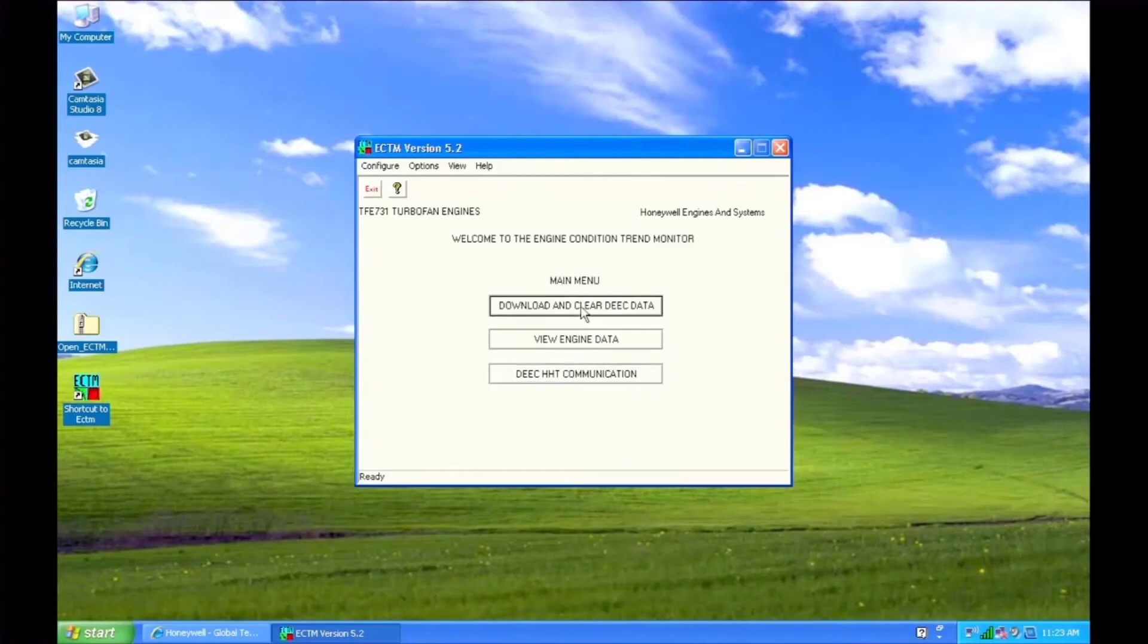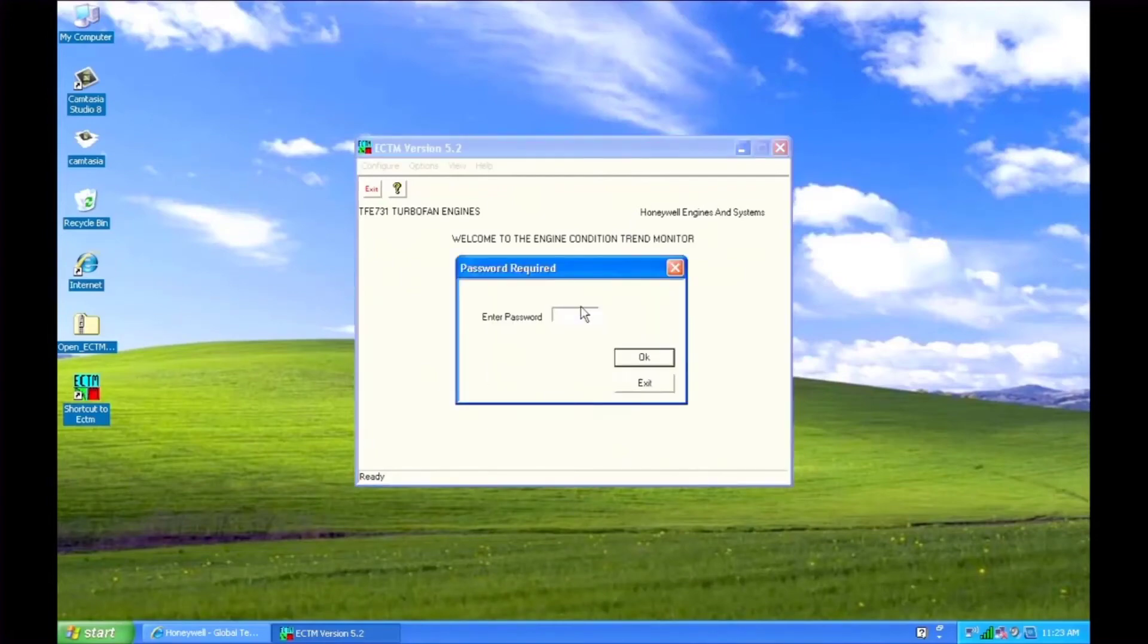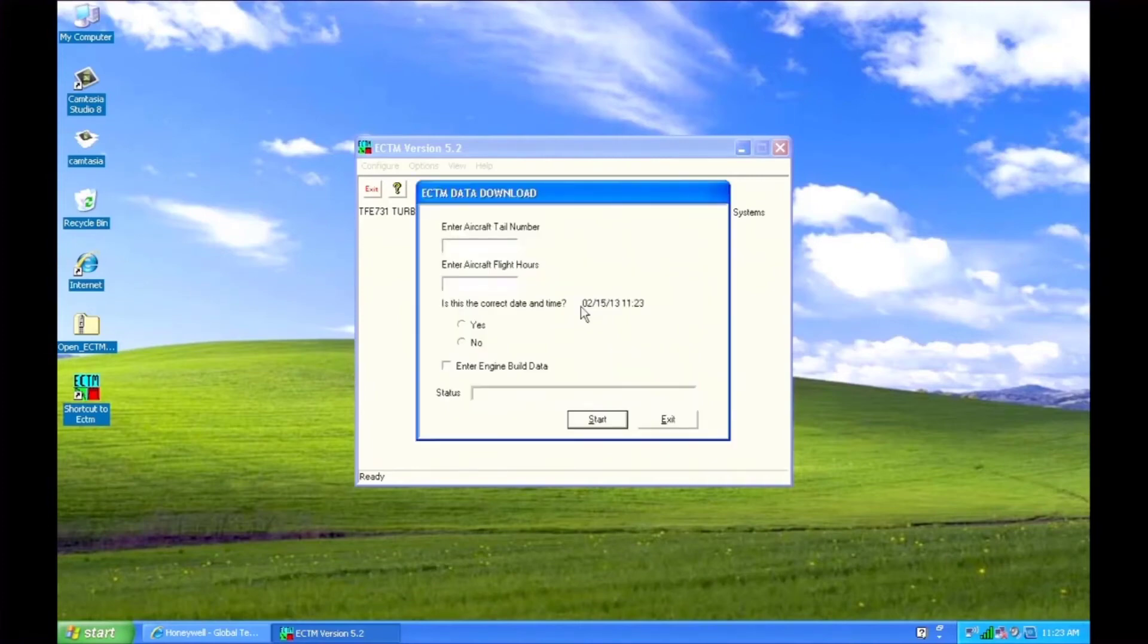Now we're ready for a download. Click on download and clear DEEC data. The default password is download. Enter the aircraft tail number and flight hours and verify the time and date.